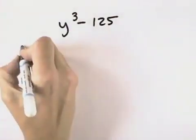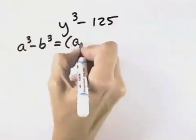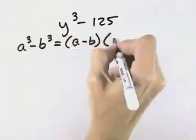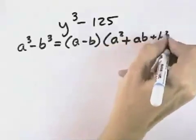That means we're going to use the formula for the difference of cubes, which says a cubed minus b cubed will be equal to a minus b times a squared plus ab plus b squared.